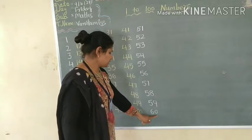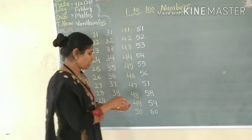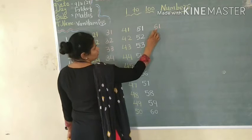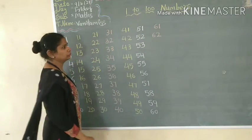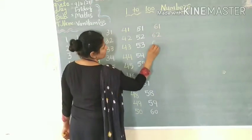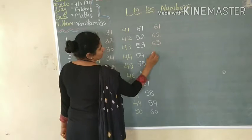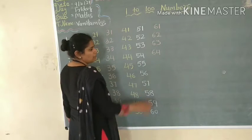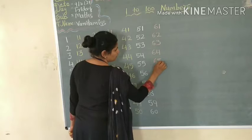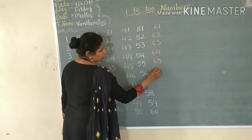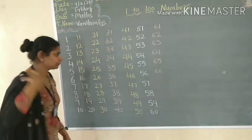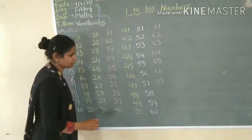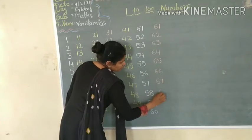After 60, which number is called? 61. After 61 is 62. And after 62 is 63. Next number after 63 is 64. And after 64, which number comes? 65. After 65 is 66. After 66, which number comes? 67. And after 67, which number comes?